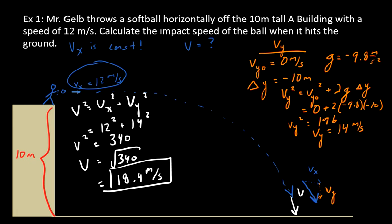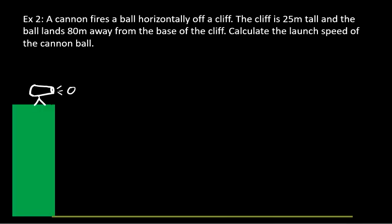Alright, that's example one. Let's read over example problem two. A cannon fires a ball horizontally off a cliff. The cliff is 25 meters tall, and the ball lands 80 meters away from the base of the cliff. Calculate the launch speed of the cannonball. Hit pause. Try the problem.